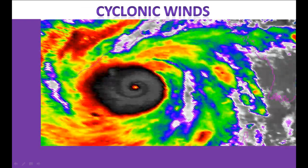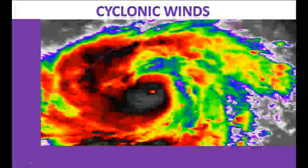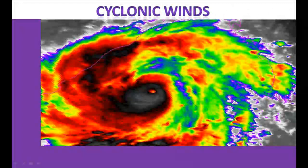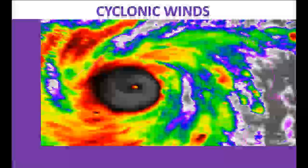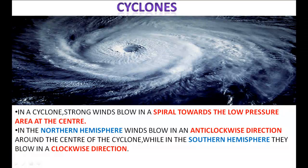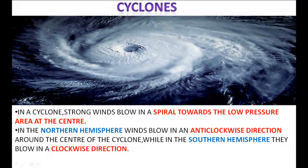Cyclonic winds are irregular winds of short duration. They are caused by pressure systems known as cyclones and anti-cyclones. In a cyclone, strong winds blow in a spiral towards the low pressure area at the center. In the northern hemisphere, winds blow in an anti-clockwise direction around the center of the cyclone, while in the southern hemisphere they blow in a clockwise direction.